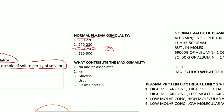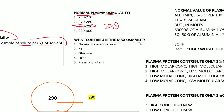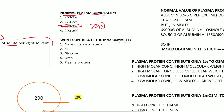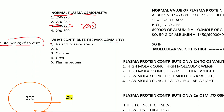Which substance contributes maximum osmolarity to plasma? The options are sodium and its associates, potassium, glucose, urea, and plasma protein. The correct answer is sodium and its associates. Many people think plasma protein has the highest contribution, but that is wrong — sodium and its associated ions contribute the most.